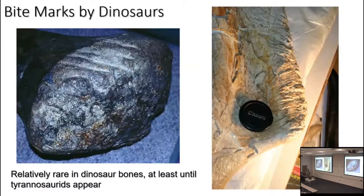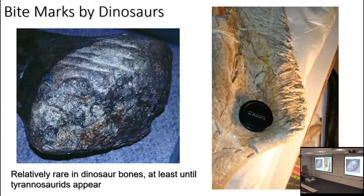Another type of trace fossil is bite marks — bite marks made by dinosaurs on other dinosaurs. They tend to be relatively rare in dinosaur bones until tyrannosaurids appear. They're present earlier; for instance, this is Chimerosaurus, a Jurassic dinosaur with bite marks, so we know that big theropods made bite marks earlier on. But when tyrannosaurids show up, they become a lot more common.